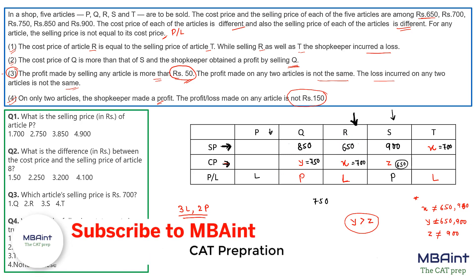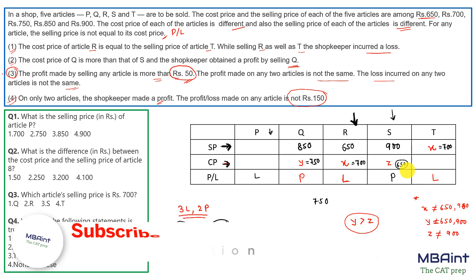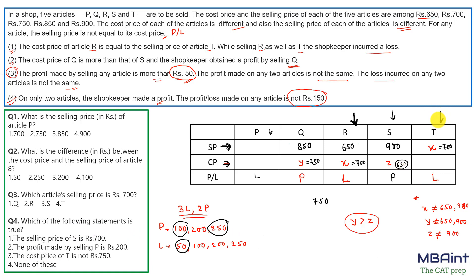With x = CP(R) = 700 and R incurring a loss, SP(R) must be less than 700, so SP(R) = 650, giving loss(R) = 50. For article T, possible losses: 50 is taken; loss of 100 requires SP = 800 which is not in our set; loss of 200 requires SP = 900 — but 900 is already SP(S). So SP(T) = 900 and loss(T) = 200. The remaining selling price cell for P is 750, and the remaining cost price is 850, giving loss(P) = 100.